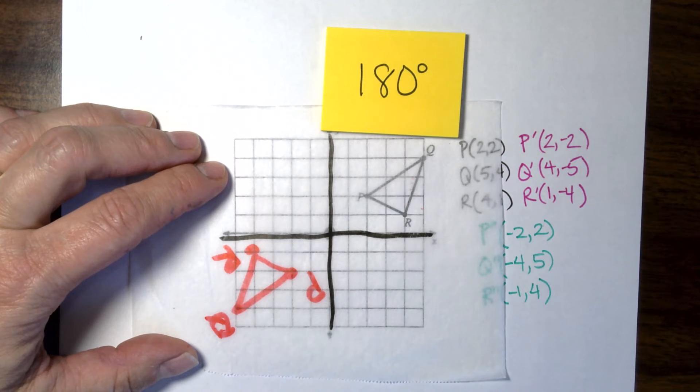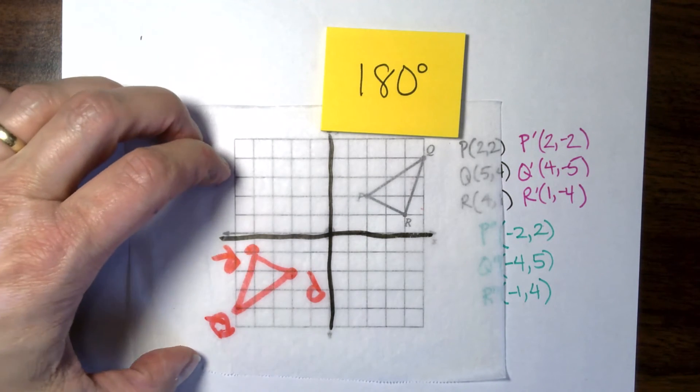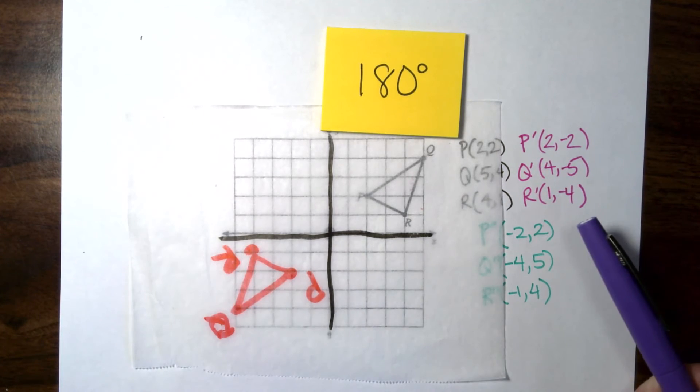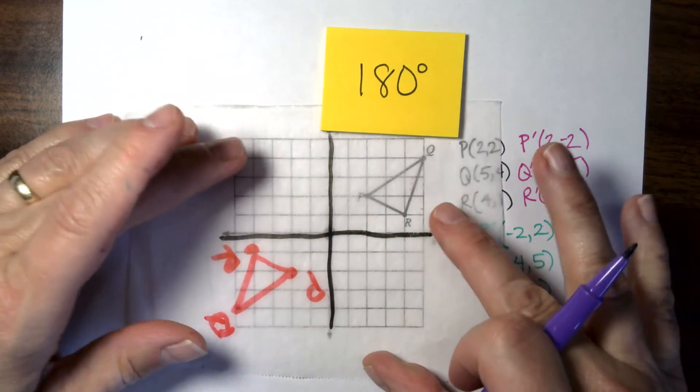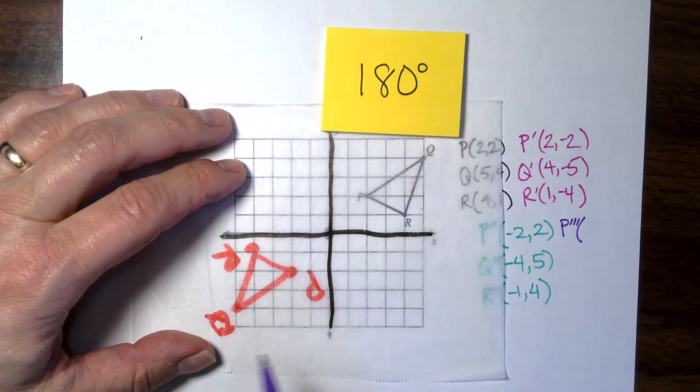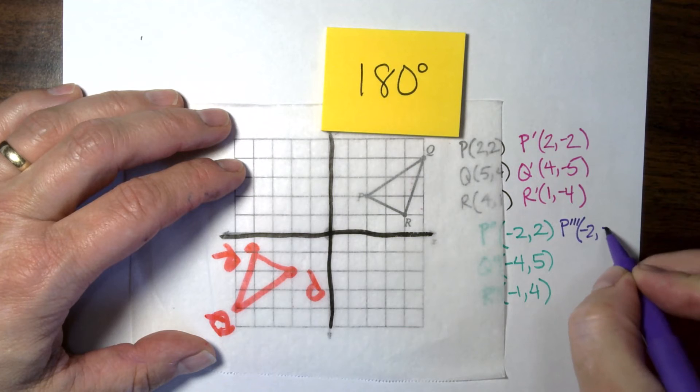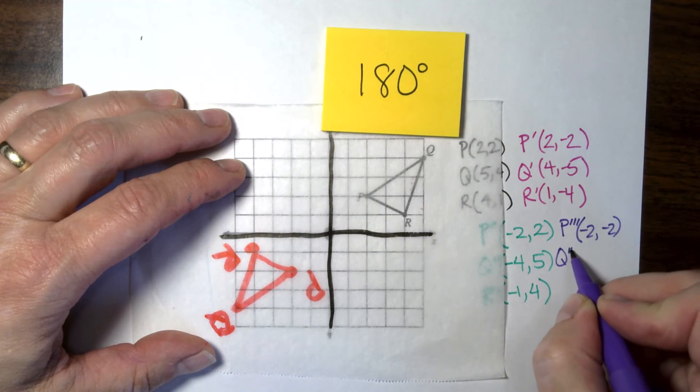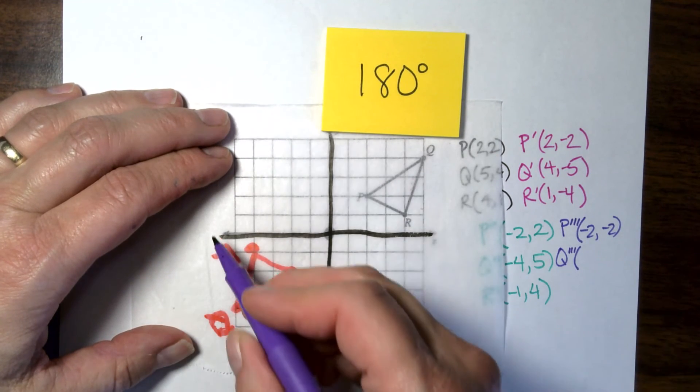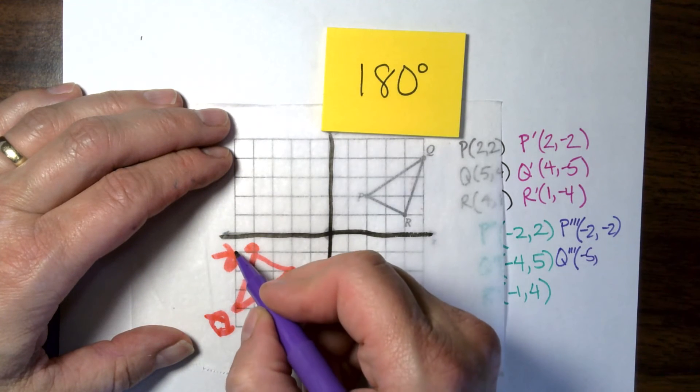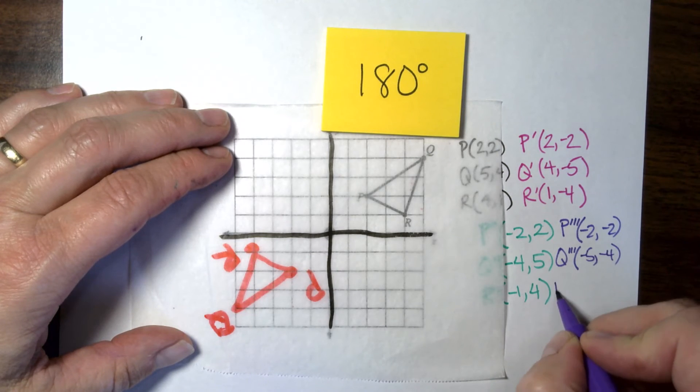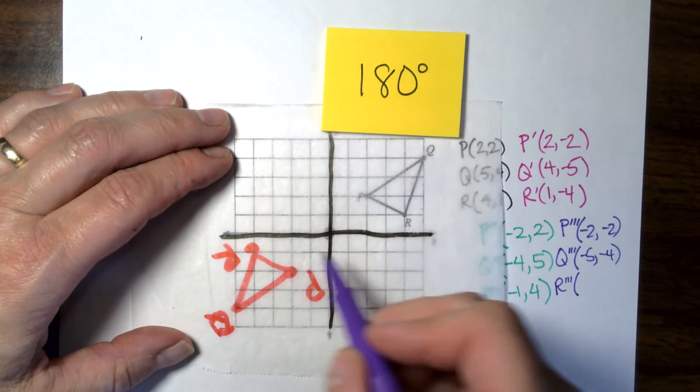Let me grab a new pen. Purple. I heard you. All right. P triple prime is going to be negative 2, negative 2. Q triple prime is going to be negative 5 and negative 4.